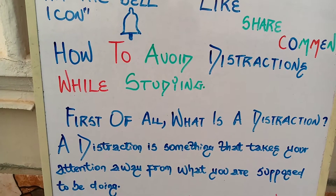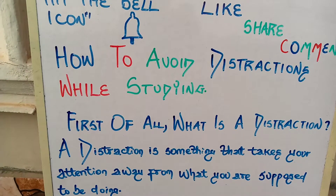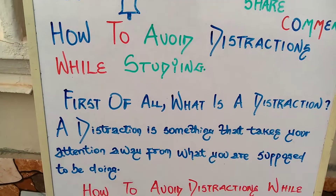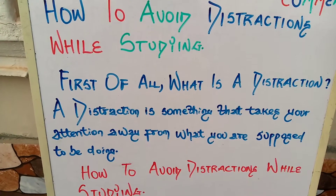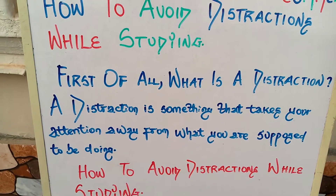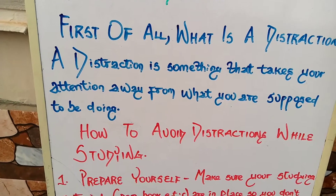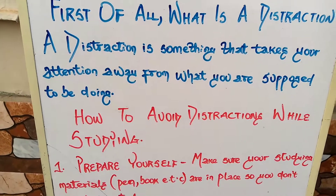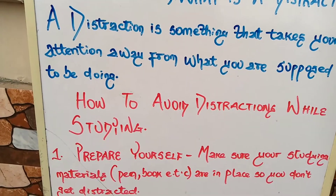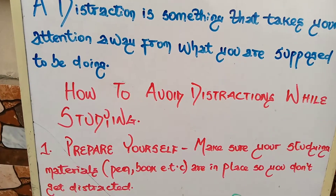The five tips on how to avoid distraction while studying. The first tip is: prepare yourself. Make sure your studying materials — your pen, your book, etc. — are ready and in place so you don't get distracted.